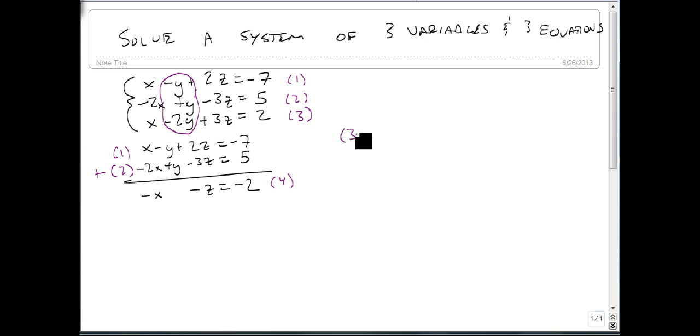Now for equation 3, we can leave it alone, but we need to add 2 times equation 2. This way, our y values will vanish. So we're going to take 2 times minus 2x and get minus 4x plus 2y minus 6z, and 2 times 5 is 10.